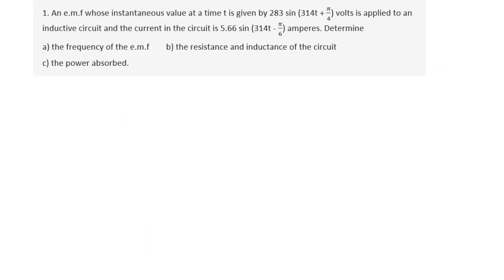For example 1: an EMF whose instantaneous value at time t is given by 283 sin(314t + π/4) volts is applied to an inductive circuit, and the current in the circuit is 5.66 sin(314t − π/6) amperes. Determine: A) the frequency of the EMF, B) the resistance and inductance of the circuit, and C) the power absorbed.